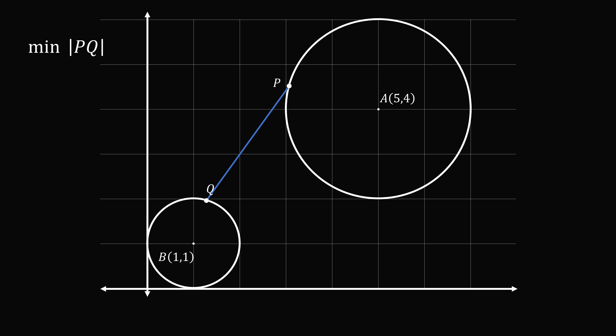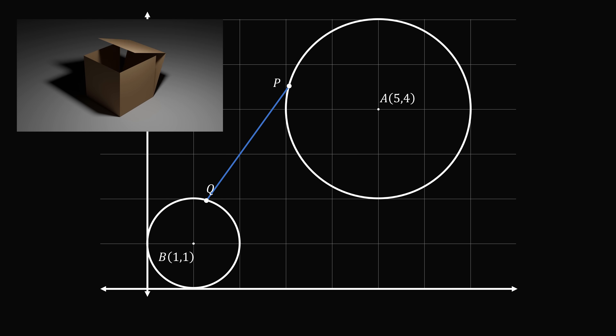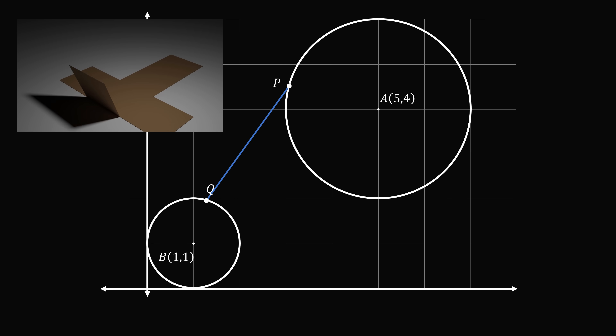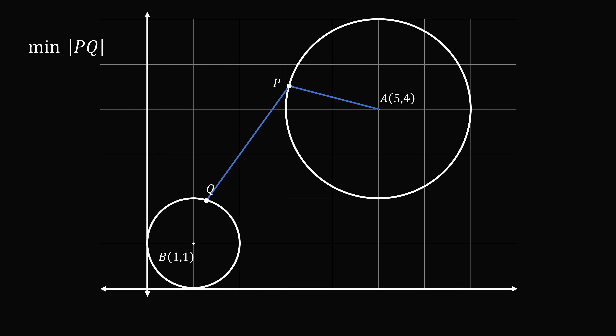There's no obvious way to do this directly. When a mathematician is stuck, a clever trick is to transform the problem into one that can be solved. In this case, we'll construct the path AP — a radius of circle A — and the path QB — a radius of circle B — giving us a full path A to B made up of three segments: AP plus PQ plus QB.